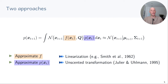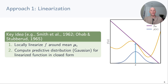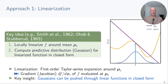Let's get started with linearization. The key idea is to locally linearize f around the mean of p of x_t and then compute the predictive distribution for the linearized function in closed form. Because p of x_t is assumed Gaussian, the distribution of x_{t+1} for this linearized function is also Gaussian. We perform a first order Taylor series expansion of f around mu_t, which requires us to compute the Jacobian of f evaluated at mu_t. Once we have this linearized function, we exploit that we can push the Gaussian input distribution through the linearized function analytically, since an affine transformation of a Gaussian remains Gaussian.